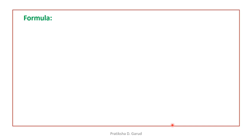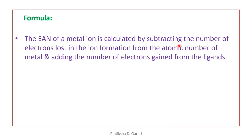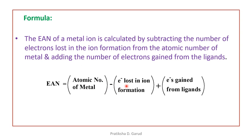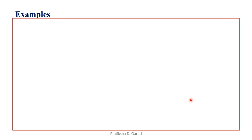For the formula: the EAN of the metal ion is calculated by subtracting the number of electrons lost in the ion formation from the atomic number of the metal, and then adding the number of electrons gained from the ligands. The formula is: EAN = atomic number of metal − electrons lost in ion formation + electrons gained from the ligands. By using this formula, let's solve some examples.